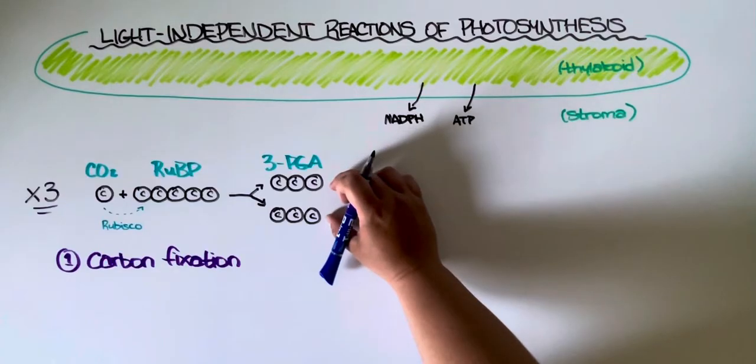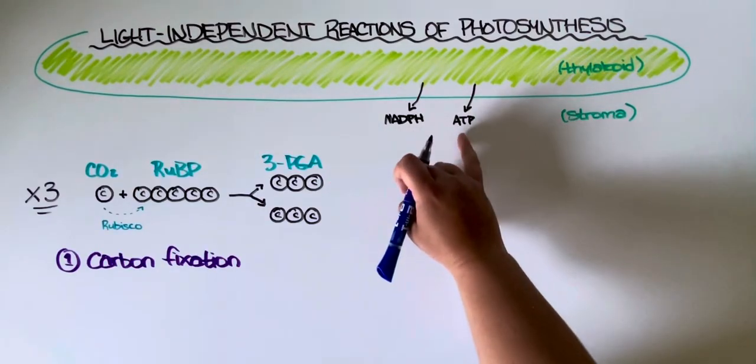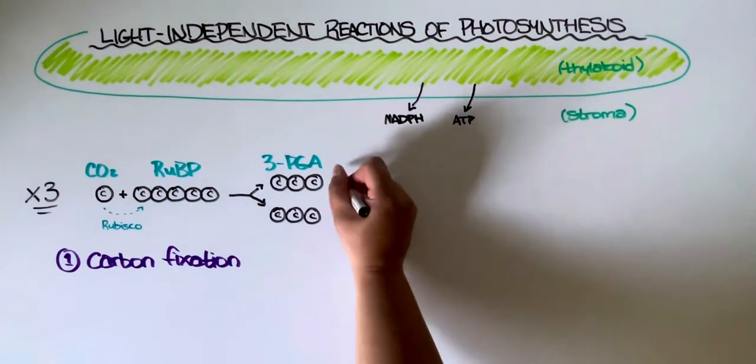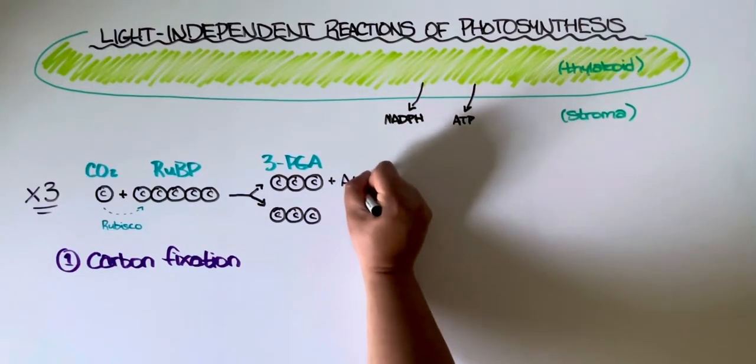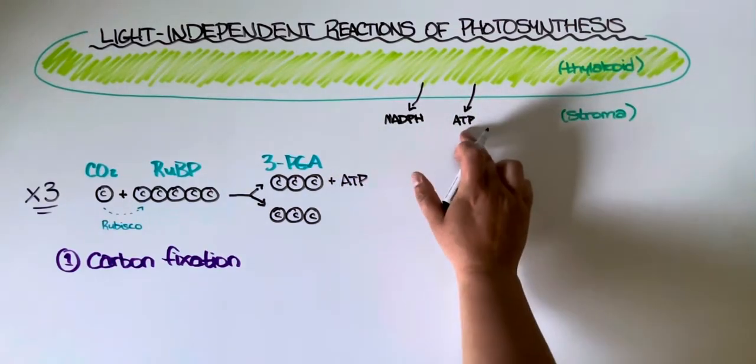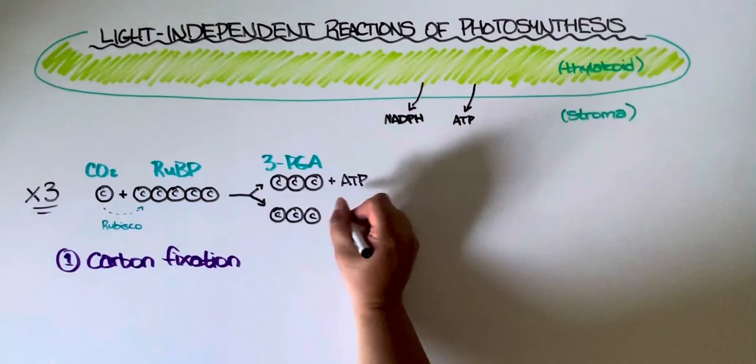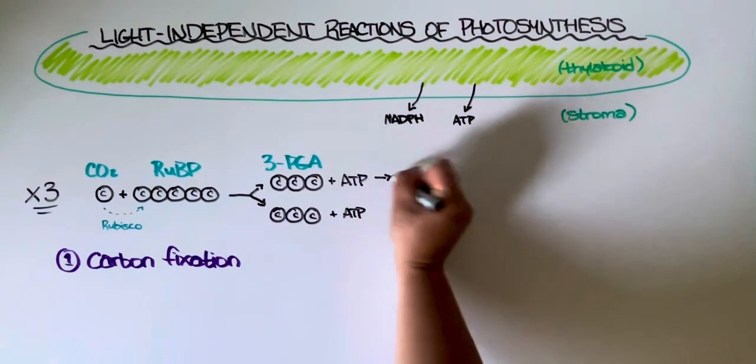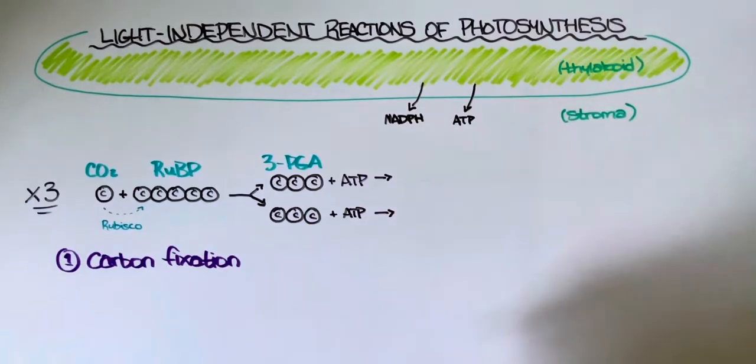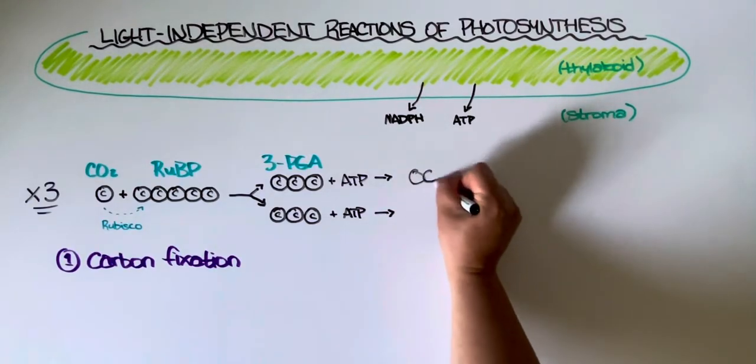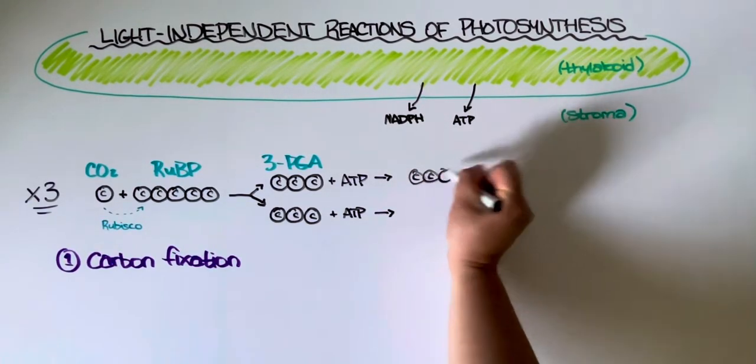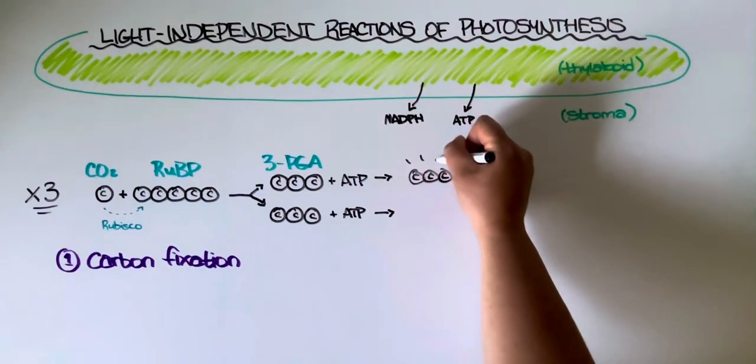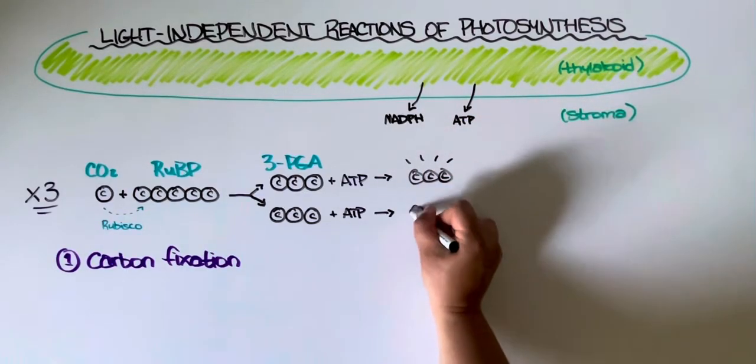Next, each of those 3PGA molecules is then going to react with a molecule of ATP. Remember the ATP was produced in our previous set of reactions. When the 3PGA reacts with the ATP, it doesn't gain any carbons but it does undergo what we call activation. It basically gains energy.